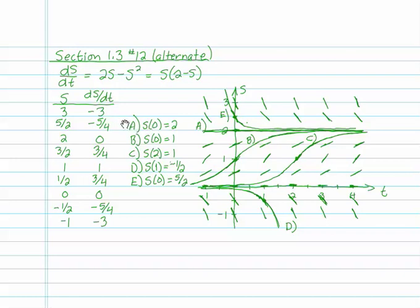Here's some sample solutions. A, s of 0 equals 2. That means when t is 0, I need a solution that goes through the point s equals 2. t is 0 and s equals 2 is right here. So I know that that solution has slope 1 at that moment. So I start off at slope 1.